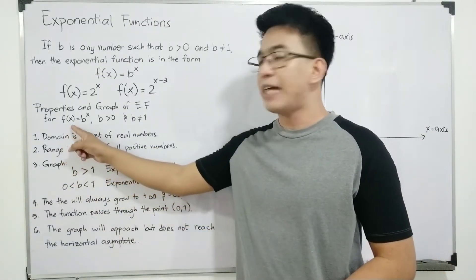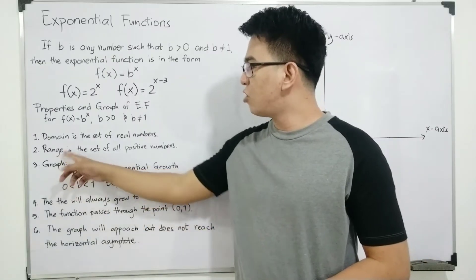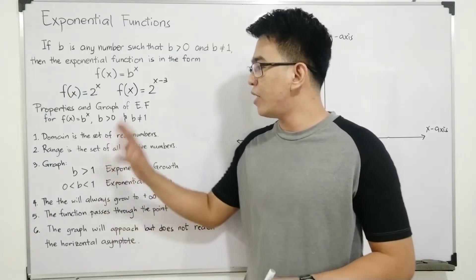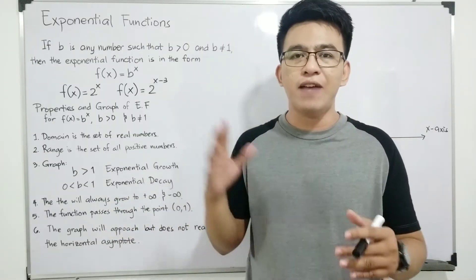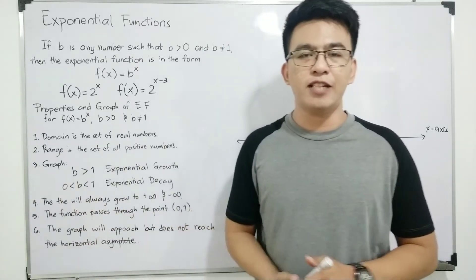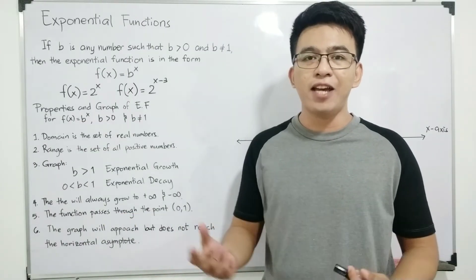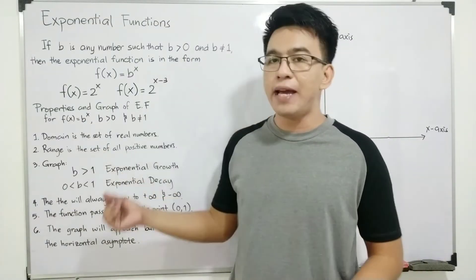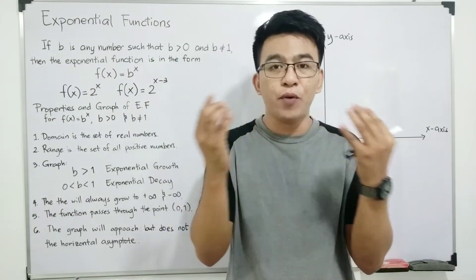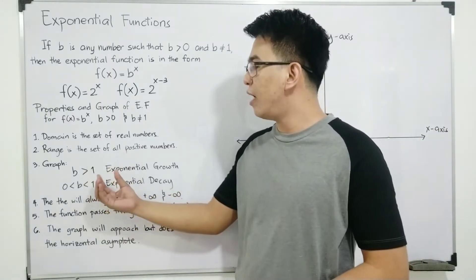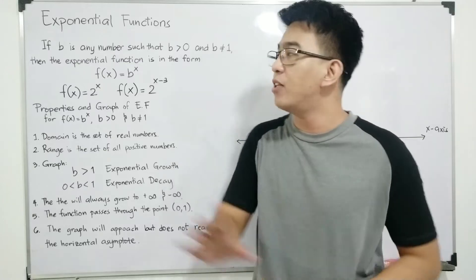First, the domain of this kind of function is the set of all real numbers. Second, the range is the set of all positive numbers. When we say domain, it is the set of values of x, or the input for the given function. For the range, that is the output or the outcome when you plug in values of x into the function. So the domain being all real numbers means any number on the number line can be a value of x, and plugging those in will give us all positive numbers for the range.